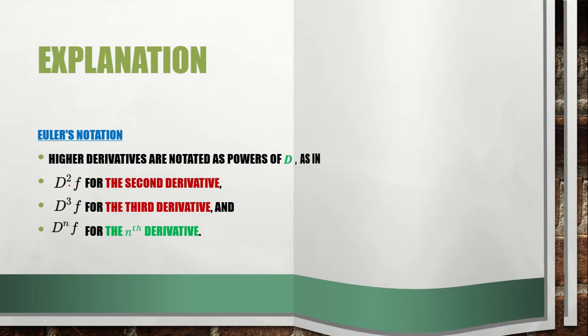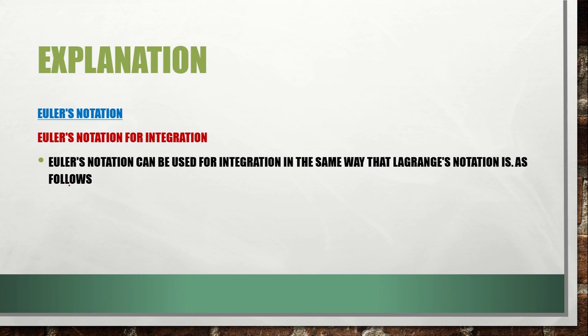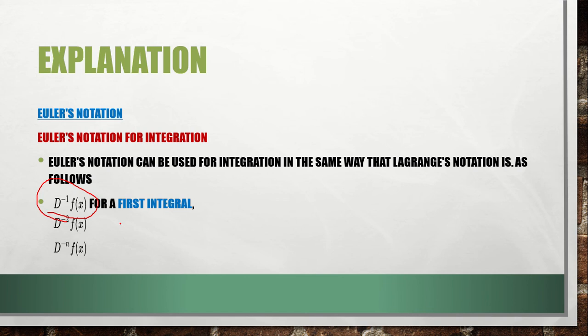Euler's notation for integration is similar to what we have seen before. Euler's notation can be used for integration in the same way as Lagrange notation, written as D to the negative power. The difference from Lagrange's integration notation is that there are no parentheses. So: D to the negative one is the first integral, D to the negative two is the second integral, and so on to the nth integral.